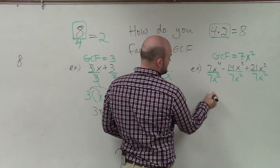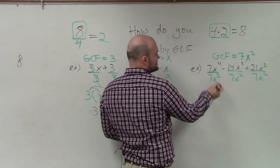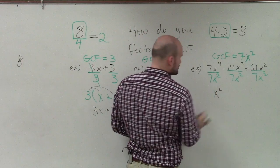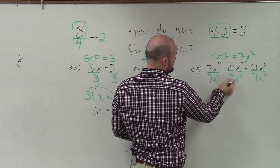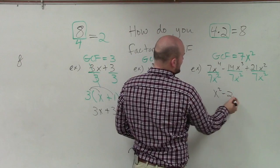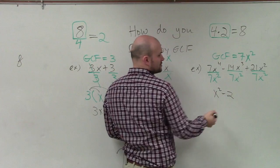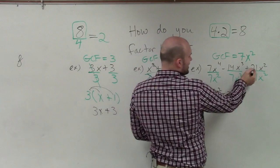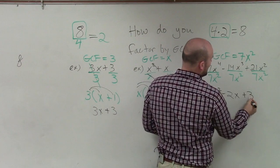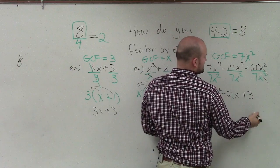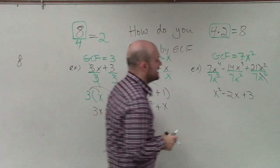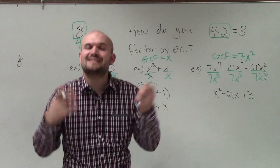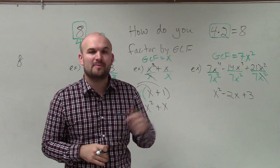Here, I have 7 divided by 7, which is just 1. x to the fourth divided by x squared. Remember, you subtract the exponent, so that's just x squared. Here, I have negative 14 divided by 2, which is a negative 2. x cubed minus x squared is x3 minus 2, which is just x to the first power. And here, I have 21 divided by 7, which is a positive 3. And then the x squareds divide out to 1, so I'm just left with x squared minus 2x plus 3. So there you go, ladies and gentlemen. That is how you factor out the GCF from a polynomial. Thanks.